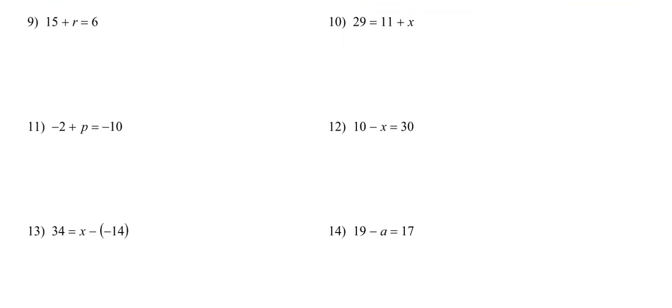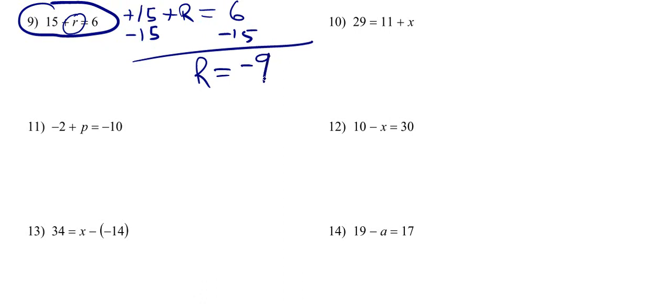Let's do just a few more here. Let's look at 9. So we've got 15 plus r is equal to 6. So we've got 15 plus some unknown number r is equal to 6. Since that's a positive 15, we're going to subtract 15 from both sides. And now you've got r is equal to negative 9. And to check that, 15 minus 9 does indeed equal 6.